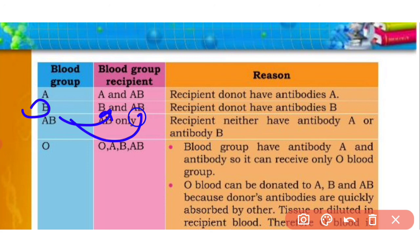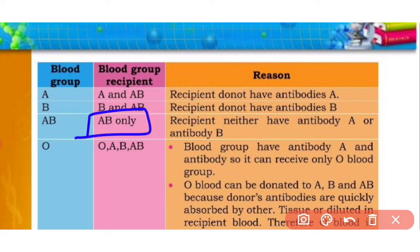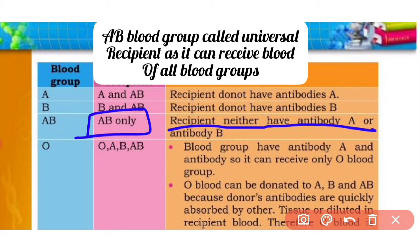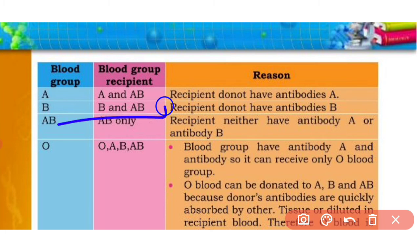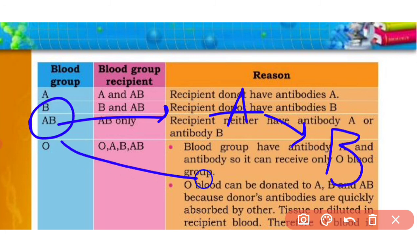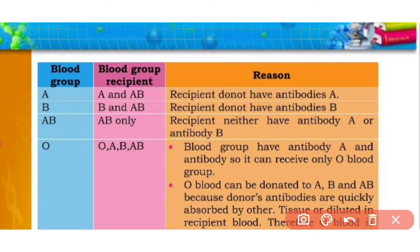Blood group AB is considered a universal recipient because the AB recipient does not have antibody A or antibody B, so any blood group can be transfused without triggering an antigen-antibody reaction against A or B antigens.